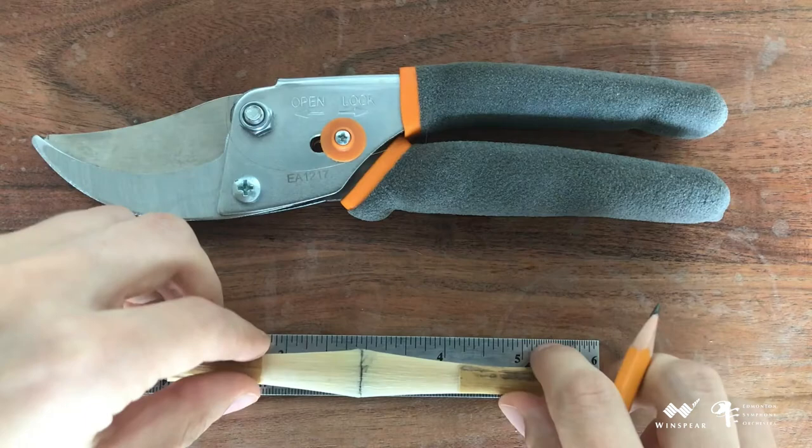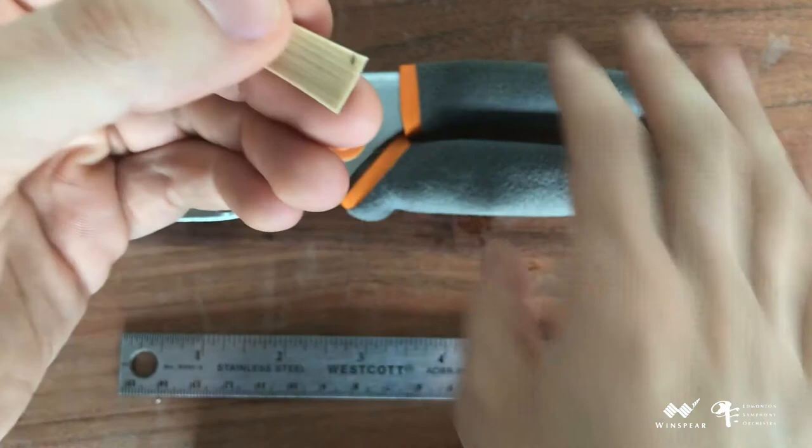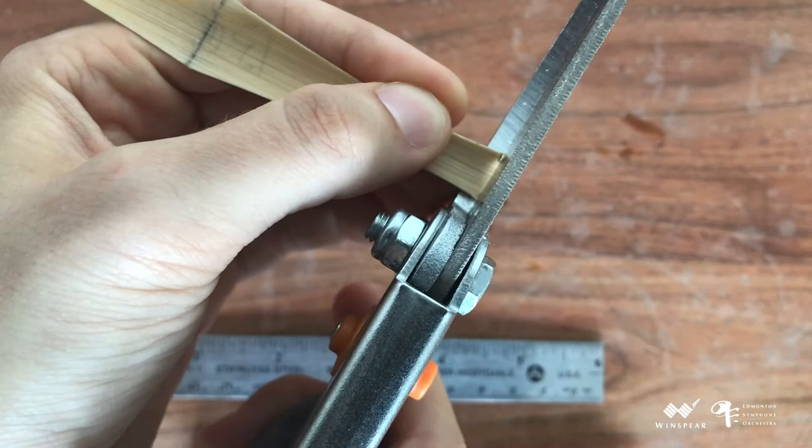Now that this measurement is marked, I'm taking my pencil and extending that mark to the underside of the cane where I can see it. I'll take the garden shears to cut this to length. The reason for using garden shears is to follow the curvature of the cane.